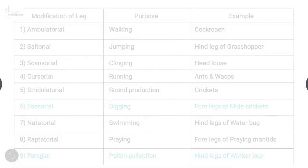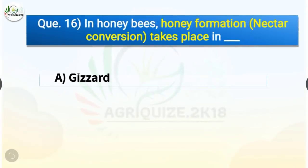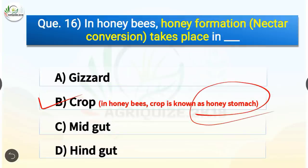Question number 16. In honeybees, honey formation and nectar conversion takes place in which organ? The options are gizzard, crop, midgut, or hindgut. The correct answer is option B, crop. In honeybees, honey formation takes place in the crop. In honeybees, crop is known as the honey stomach.